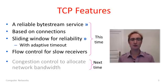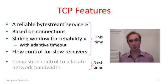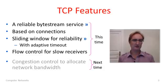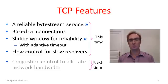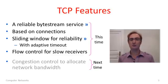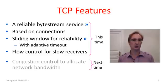TCP also includes flow control to help slow receivers handle fast senders — we've seen how that works too. So these are the features I'll cover briefly in this segment. We will also look at another topic later on: congestion control, which is implemented by TCP. This is to match the sending rate of the sender to the available capacity inside the network. This is a major portion of TCP, but we're going to treat it as a separate topic. So I'm mostly talking about reliability functions today.